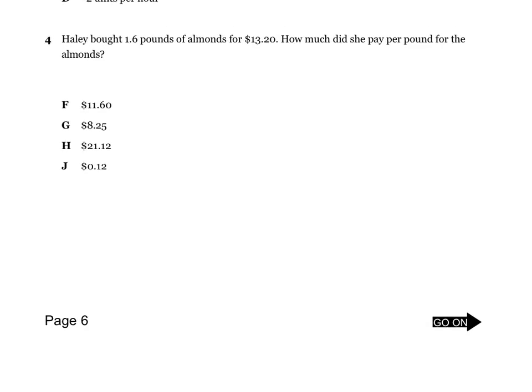Number four: Haley bought 1.6 pounds of almonds for $13.20. How much did she pay per pound for the almonds? We're going to highlight 1.6 pounds, $13.20, and the question asking how much per pound. We need a WKU here.